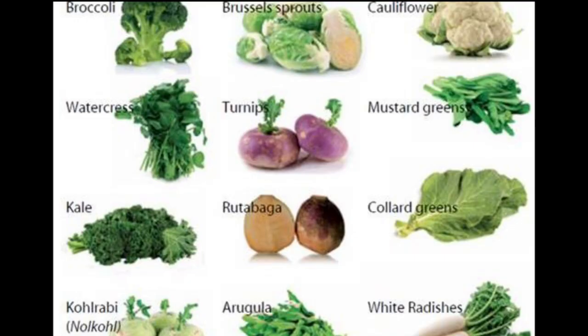So today we're going to talk about insects that actually infest brassica plants. So what exactly are brassica plants? Brassica plants are the plants that include collards, mustard, kale, turnip, as well as broccoli, cauliflower, and other plants.